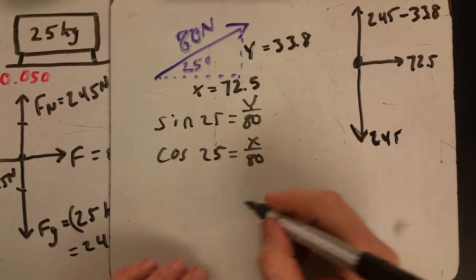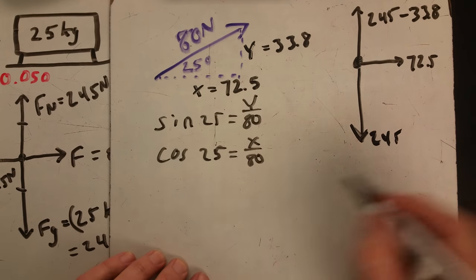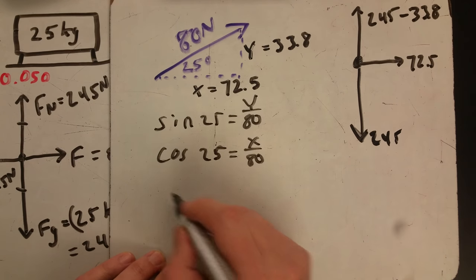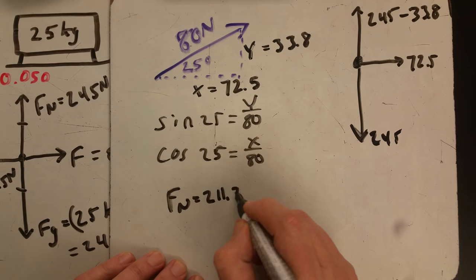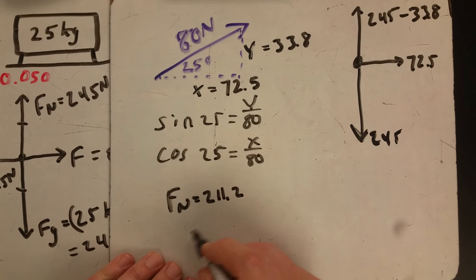And now we see our normal force is 211.2. Multiplying that times mu gives us 10.56.